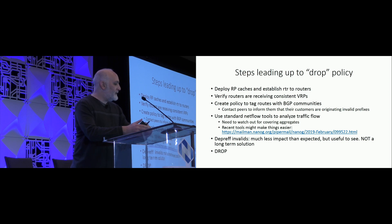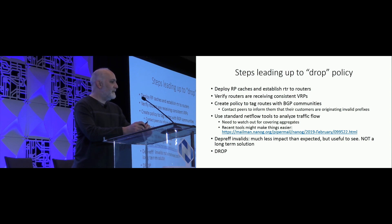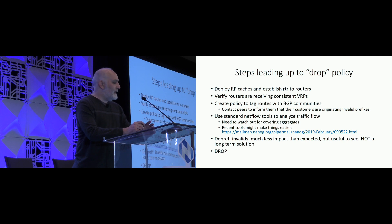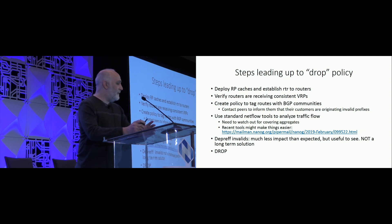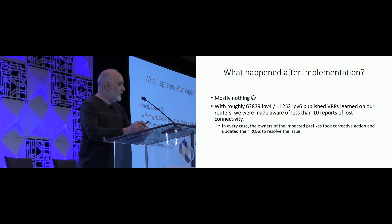We did take an additional step of de-prepping those invalids. It had a little bit of impact to decrease some of the traffic and shift it away from those prefixes, but really a lot less than we expected. It's kind of useful to play with and look at, but it's not a long-term solution — it doesn't work very well. And then the final step is to drop those routes coming in, which we did a couple of weeks ago.